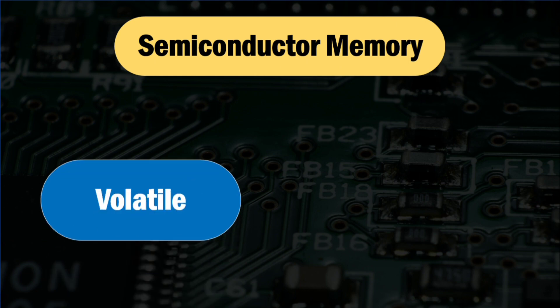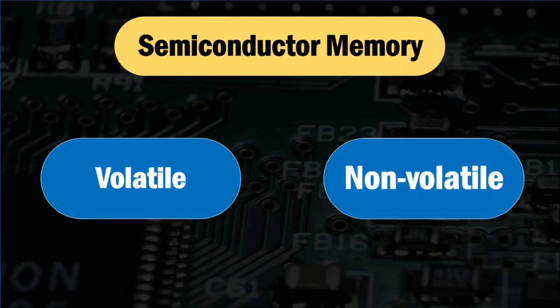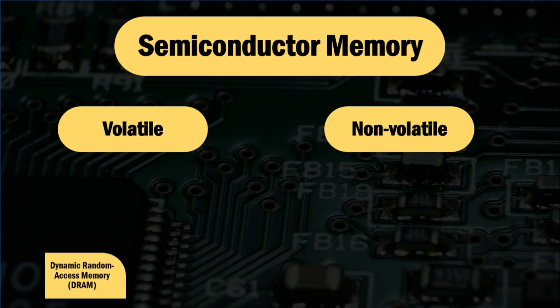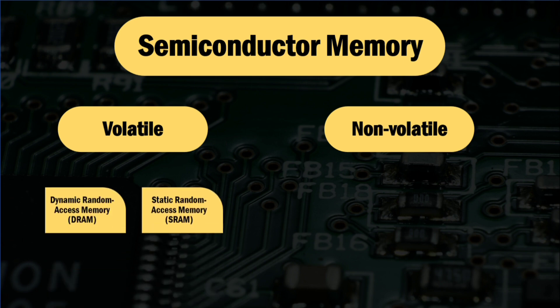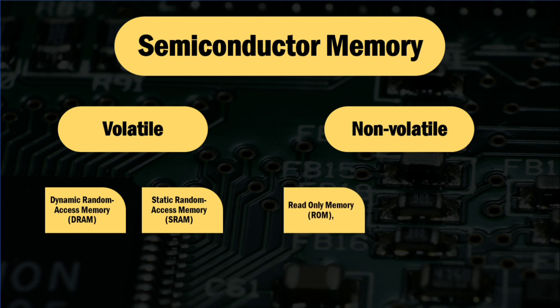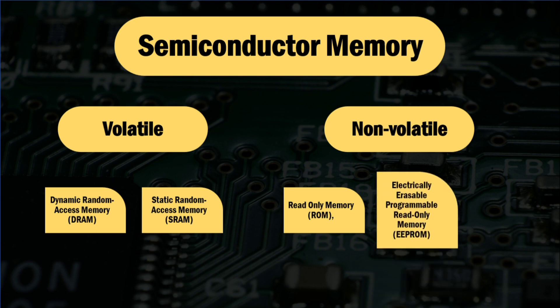The semiconductor memory can be divided into two main categories. The first is volatile memory, such as dynamic random access memory (DRAM) and static random access memory (SRAM), which requires power to retain stored data.